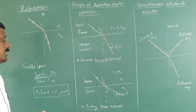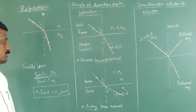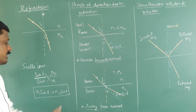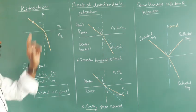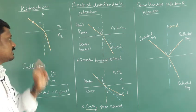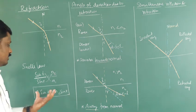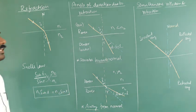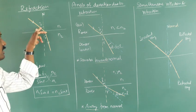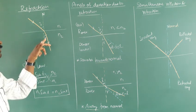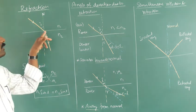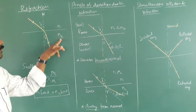So that is Snell's law: sin i divided by sin r equals n2 divided by n1. Cross-multiplying, we get the product form: n1 sin i equals n2 sin r. This relates the angle of incidence in the first medium and the angle of refraction in the second medium to their respective refractive indices.